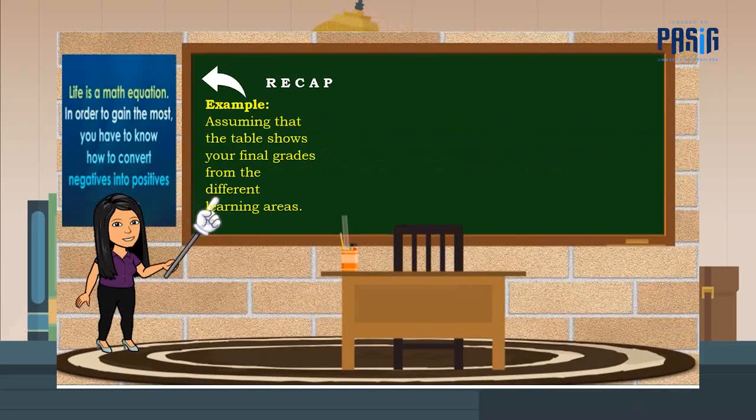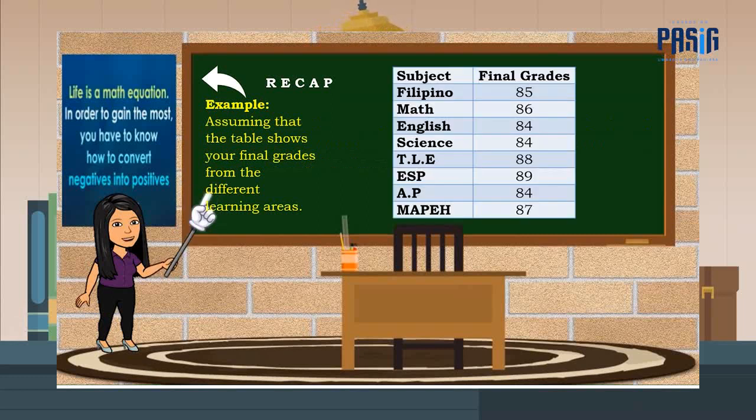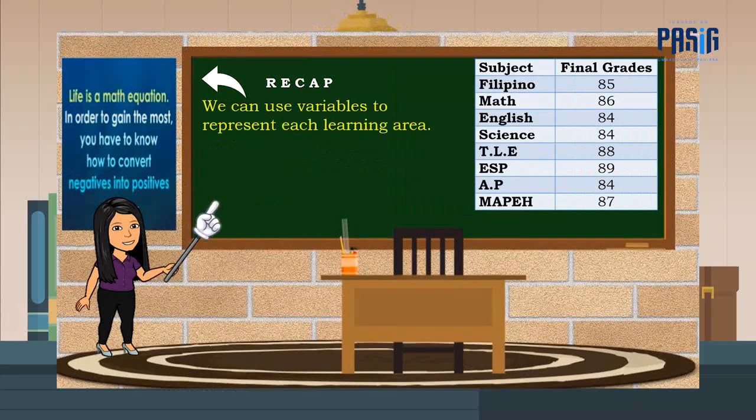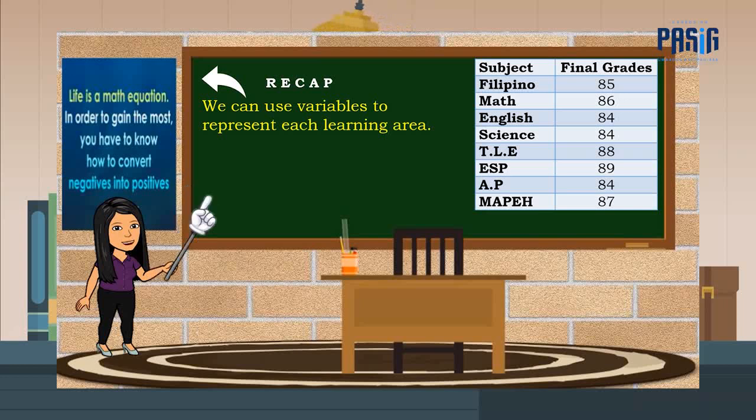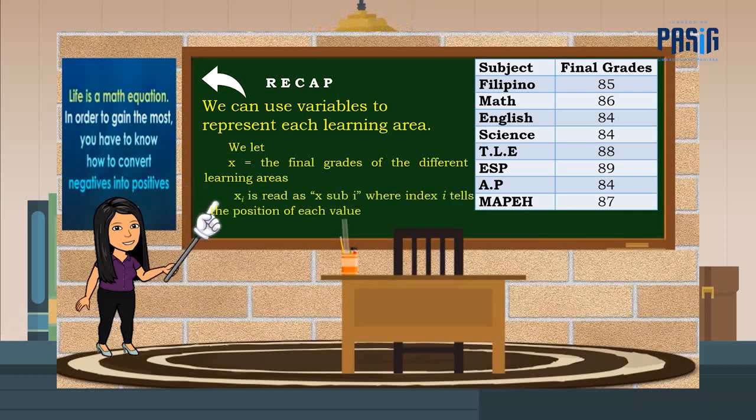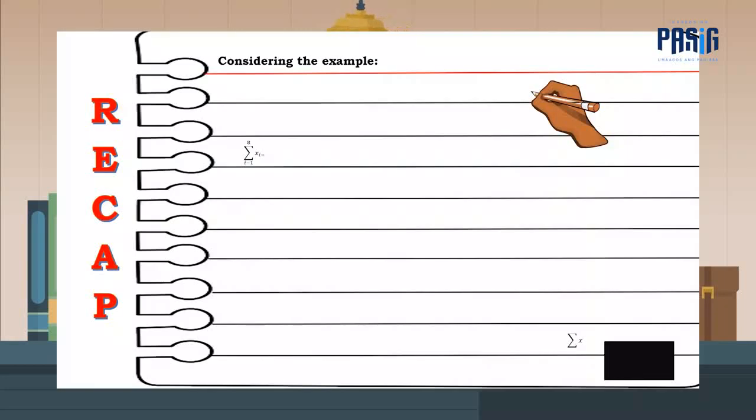For example, assuming that the table shows your final grades from the different learning areas, we can use variables to represent each learning area. We let x be the final grades of the different learning areas. This symbol is read as x sub i where index i tells the position of each value. Considering the example, we can use this formula. To substitute the data, we have the summation of x sub i as i goes from 1 to 8 equals 85 plus 86 plus 84 plus 84 plus 88 plus 89 plus 84 plus 87. Therefore, the summation of x sub i is equal to 687.